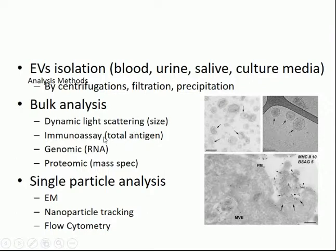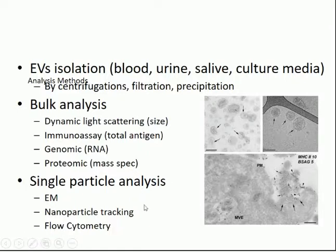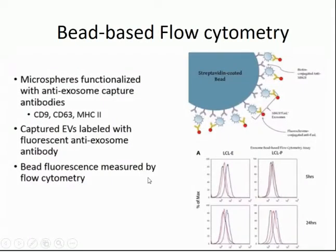You can go a little further by looking at antibodies and proteins by immunoassays. You can also do proteomics, mass spec, or RNA analysis. But most of the time for extracellular vesicles, electron microscopy — like in this picture here — nanoparticle tracking, and flow cytometry are the best tools to visualize and analyze them in terms of function and content.